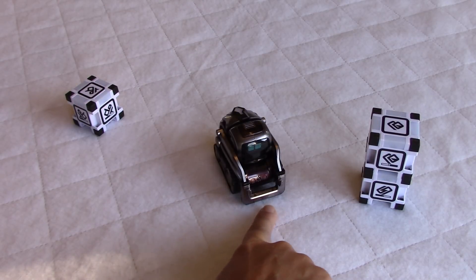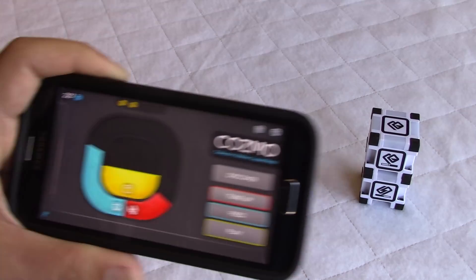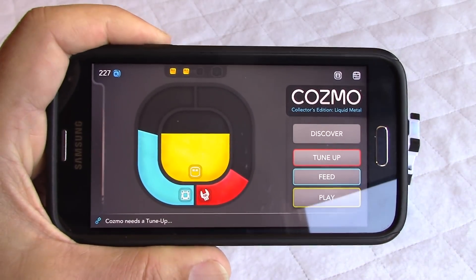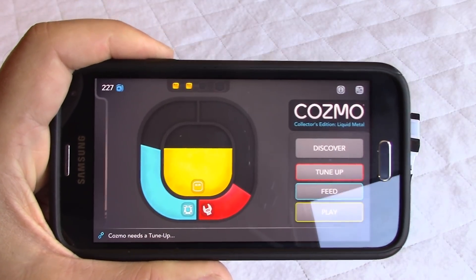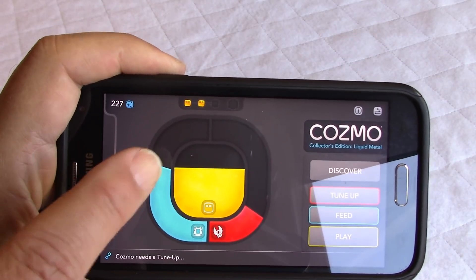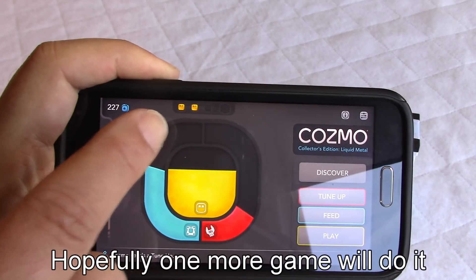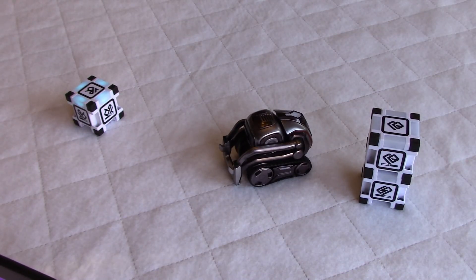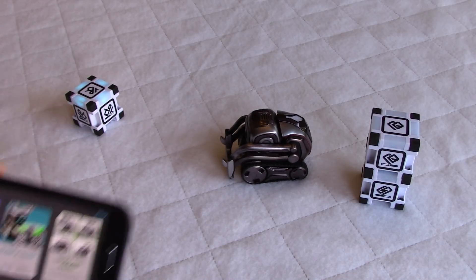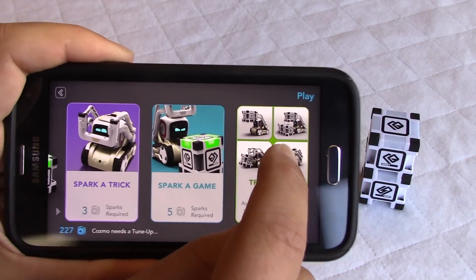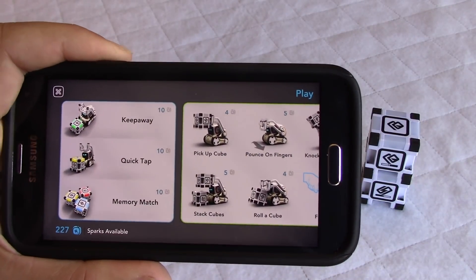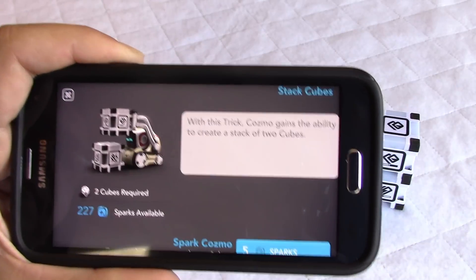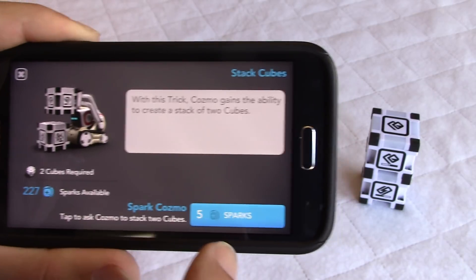Okay, so as you can see now, the yellow bar went up a bit. So we'll play one more game and then we'll see what happens when you get three bites. Let's click on play and we'll choose a trick. We'll ask Cozmo to stack cubes, and that will cost us five sparks. So we'll go with that.